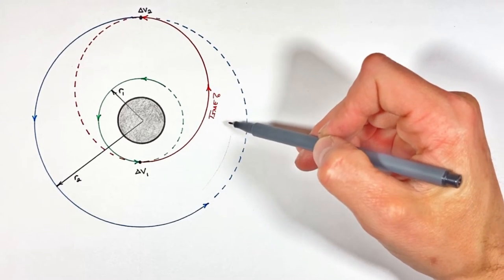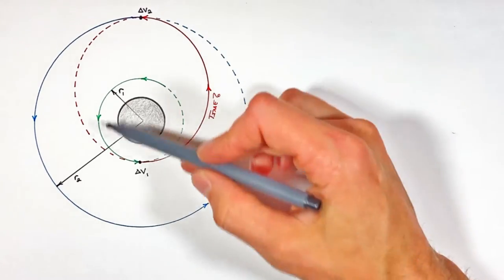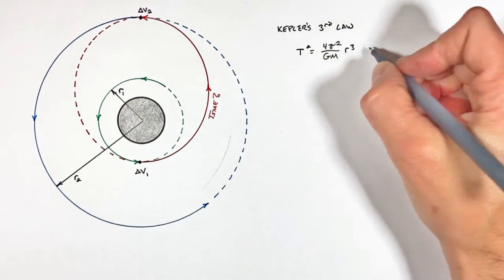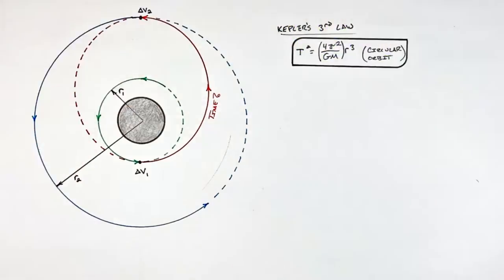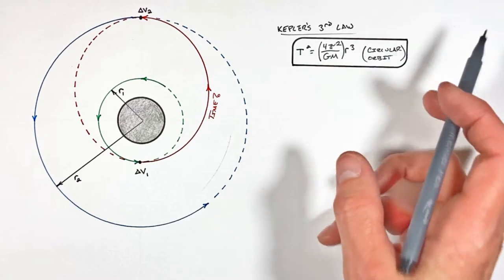Now the reality here is coming up with the time is actually pretty simple so long as you realize we can apply Kepler's third law to this elliptical orbit. Now for a circular orbit, Kepler's third law is actually pretty easy to derive.